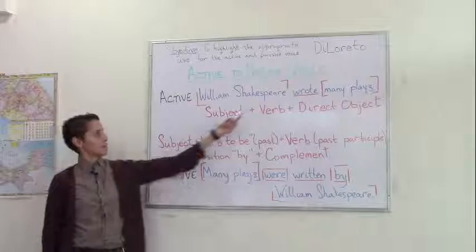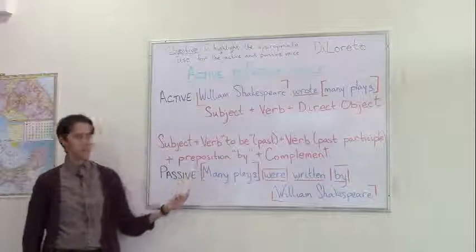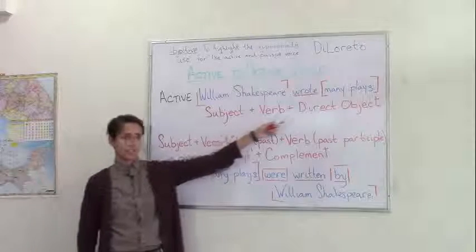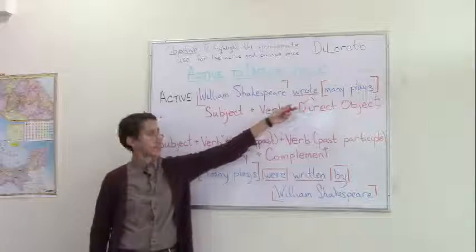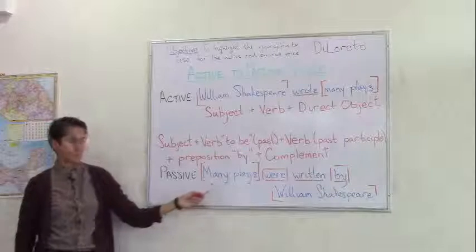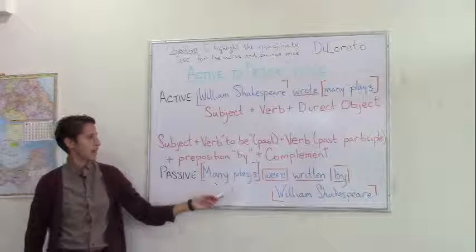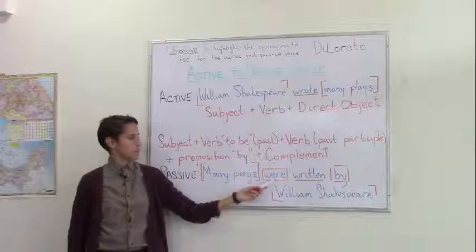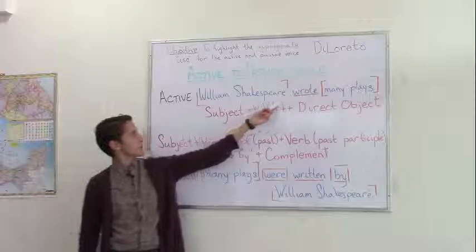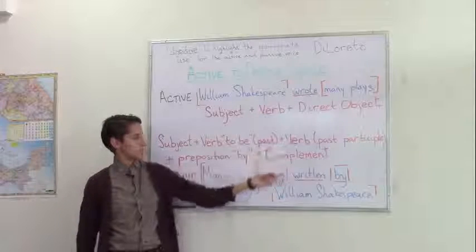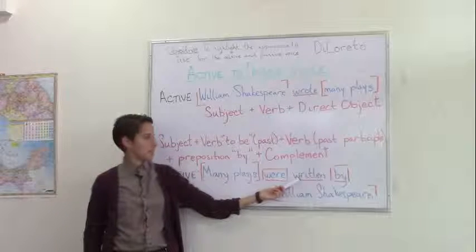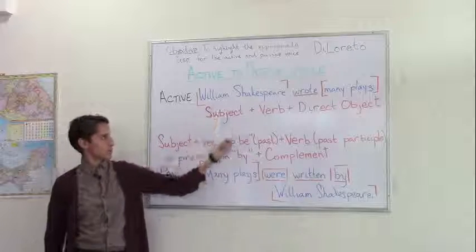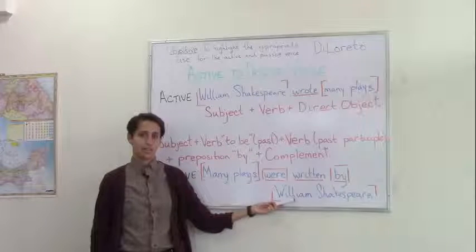When transforming an active voice into the passive voice, you must first identify the direct object in the active sentence. In this case, many plays. Many plays becomes the subject in the passive voice. You add the verb to be in the past tense, which is were. You take the main verb in the active voice and turn it into the past participle, written. Add the preposition by, and the subject from the active voice becomes the complement in the passive voice.